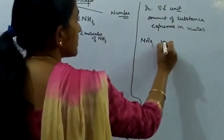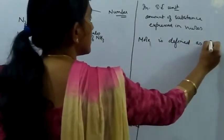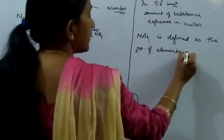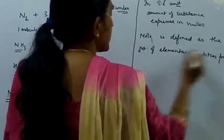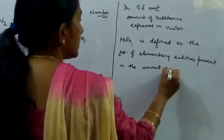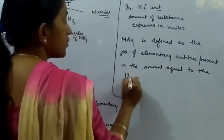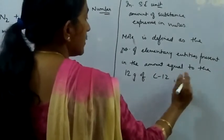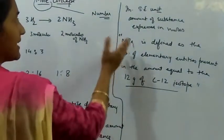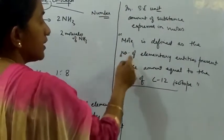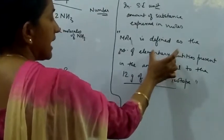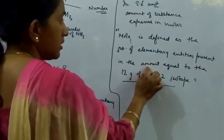The mole is defined as the number of elementary entities present in an amount equal to 12 grams of the carbon-12 isotope. So a mole is a number of elementary entities — the basic entities present in a substance, which are atoms, molecules, or ions. Its relation is given with an amount equal to 12 grams of carbon-12 isotope.